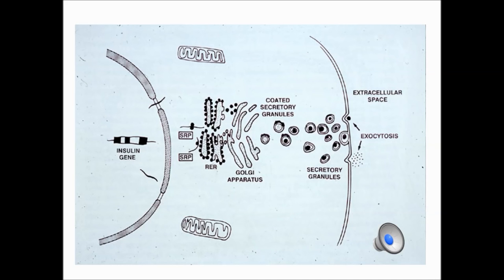Insulin is synthesized in the endoplasmic reticulum as a pro-hormone called pro-insulin. From there it goes to the Golgi apparatus and is eventually packaged into secretory granules, and inside the secretory granules it is cleaved to insulin and C-peptide. This is better shown in the next slide.